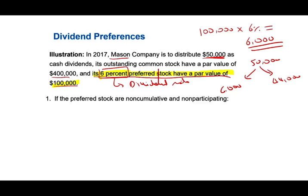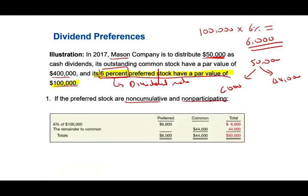So if the preferred is non-cumulative and non-participating — simply put, it's the regular preferred — here's what's going to happen: $6,000 will go to the preferred and what's left is $44,000, which goes to the common. So the preferred gets $6,000 and the common gets $44,000. This is a preferred dividend that's non-cumulative and non-participating.